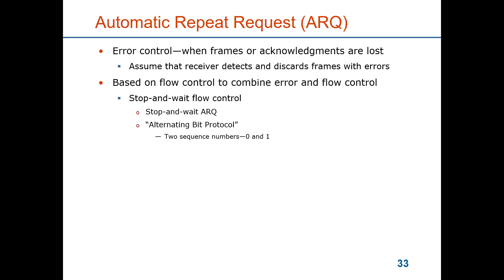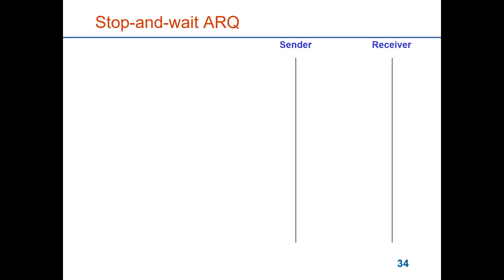For the same reason as we devised a sliding window protocol for flow control to get better utilization, we also need to have a sliding window with respect to ARQ to get better throughput. There are two variants: go-back-N and selective reject. I will spend most time on go-back-N but I will mention how selective reject differs from go-back-N.